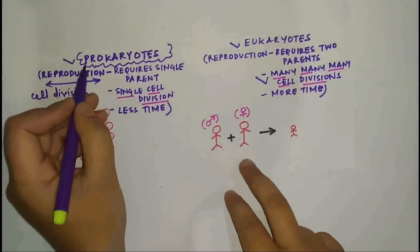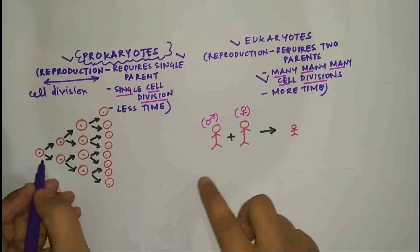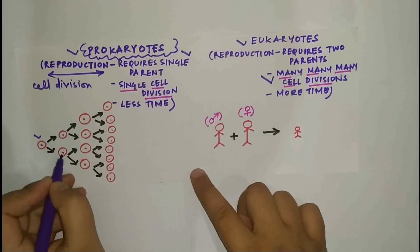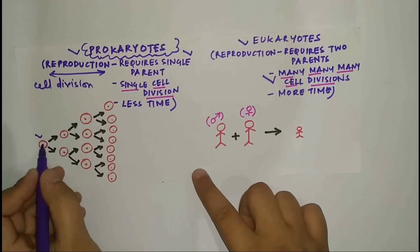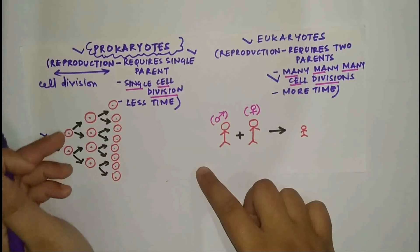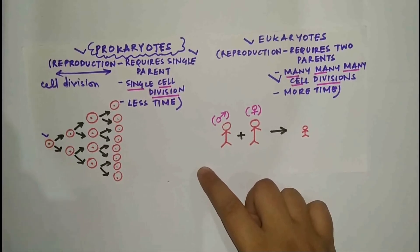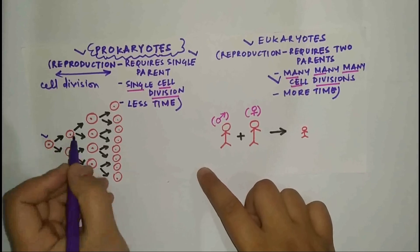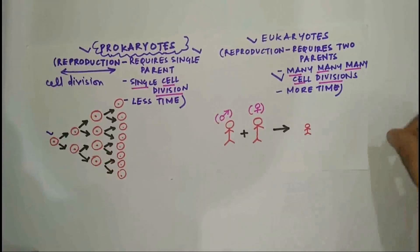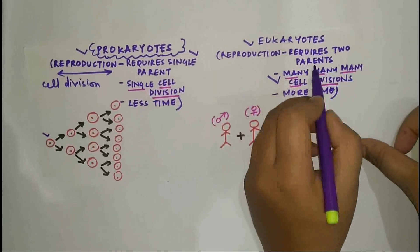In prokaryotes, reproduction requires only one single parent. As you see in the diagram, there's one cell giving rise to two cells — one parent cell gives rise to two daughter cells. These two daughter cells will further multiply, undergoing mitotic cell division to give rise to two more daughter cells, and the process continues. But in eukaryotes, reproduction requires two parents.